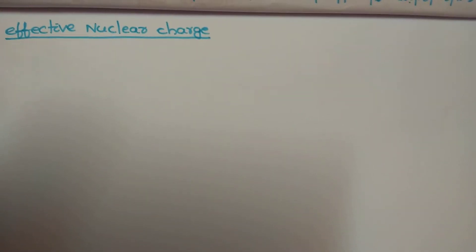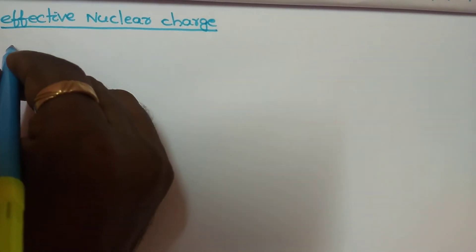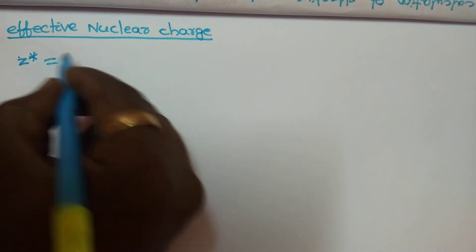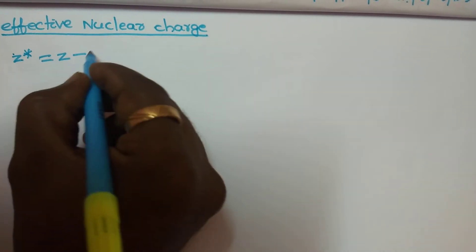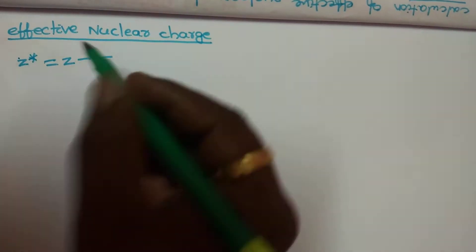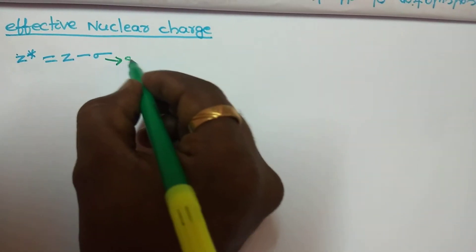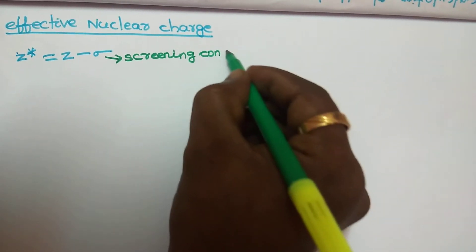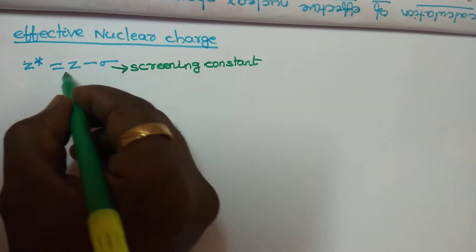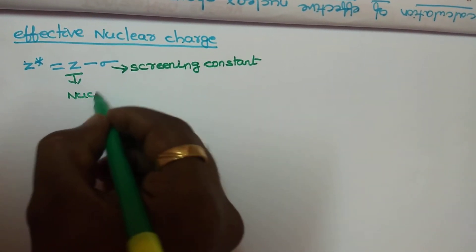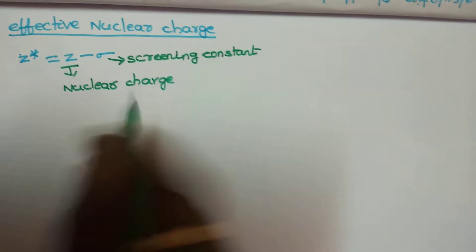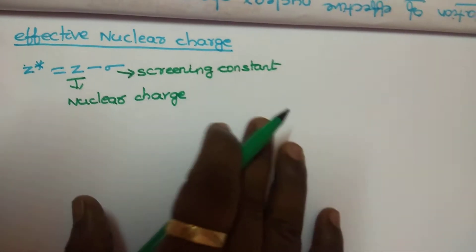Coming to the topic: effective nuclear charge. The symbol of effective nuclear charge is Z*, where Z* = Z − σ. Here, σ is the screening constant and Z is the nuclear charge. To find the effective nuclear charge, you have to use this formula.